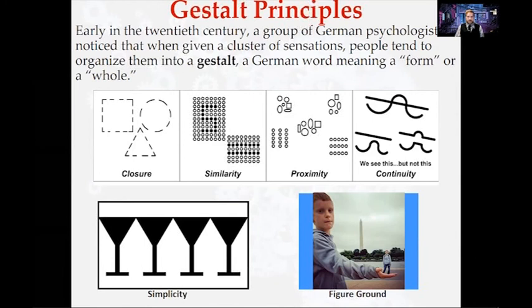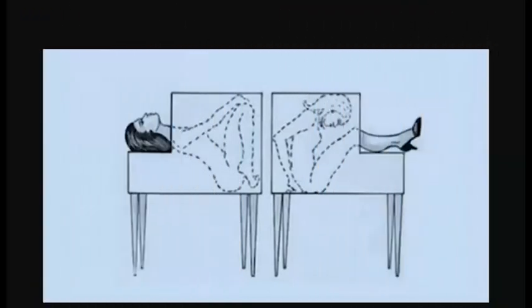With continuity, when something is in front of something else, we tend to know that it continues behind it. Some illusions work this way — for example, the sawing-in-half illusion. When a magician saws a person in half, obviously they're not being cut in half. What's happening is we see a head sticking out of a box and feet sticking out of a box, and we assume that's one continuous person, not two individuals. So when the magician saws the person in half, they're cutting neither person. That's one example of continuity.